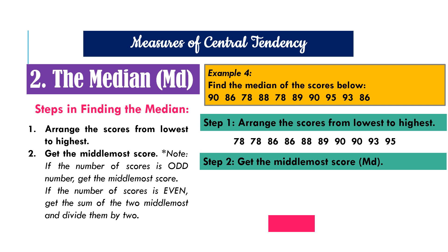Step two, we get the middlemost score. But there are two scores in the middle, which is 88 and 89. So we have to get its average. So we first get the sum, which is 177 divided by two. It is equal to 88.5. So the result or the median for example four is 88.5.